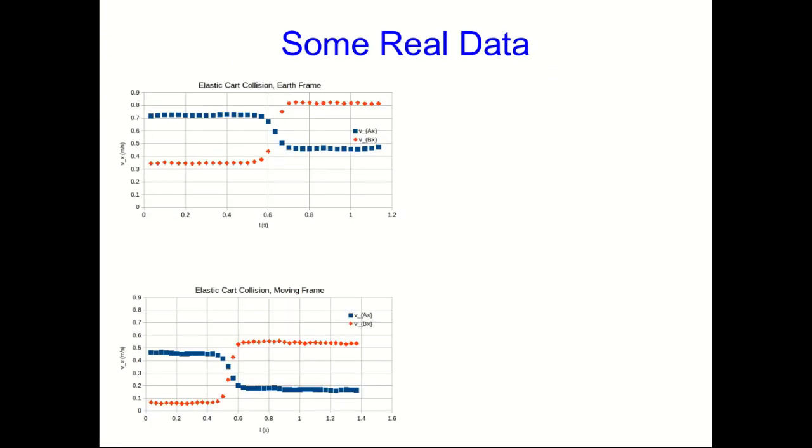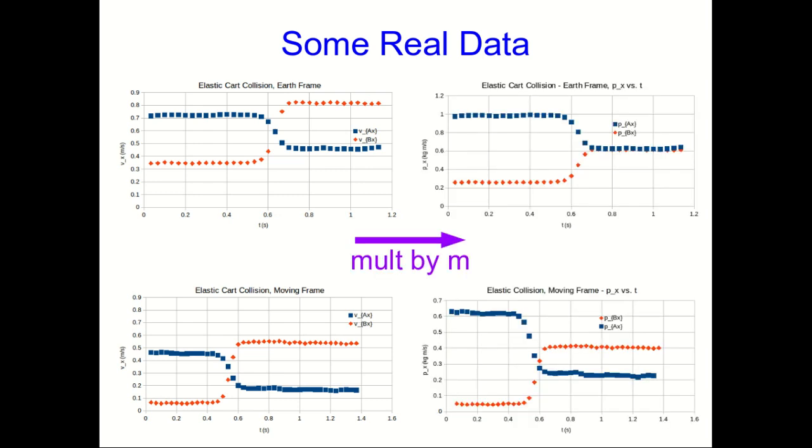If you look back at the data that we had for the two colliding carts, where we could view it from the earth frame and from a camera on another moving cart, there's an interesting feature in the data, but you kind of have to dig to see it. If you multiply the velocities by the masses so that you get momentum versus time graphs, you can see how the momentum versus time graph in the moving frame is just shifted relative to the earth frame, but also the two curves are shifted relative to each other.